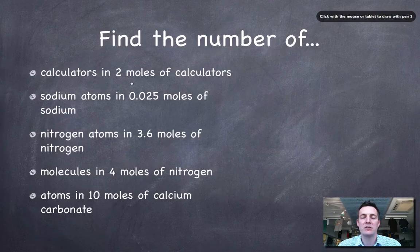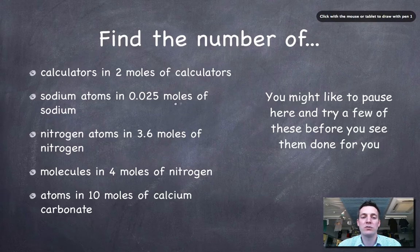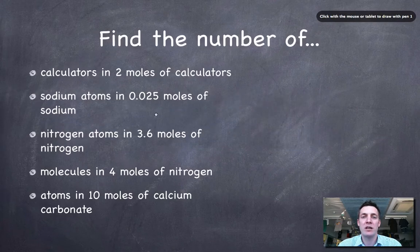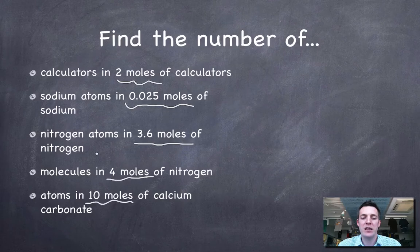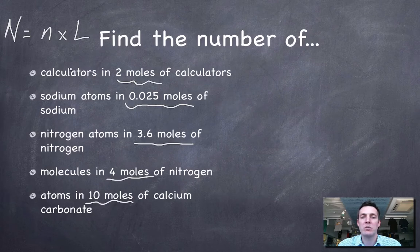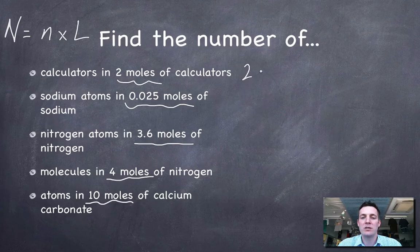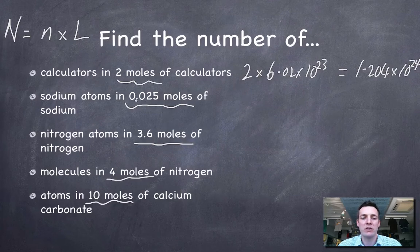We're being asked to find the number of calculators in two moles of calculators and the number of sodium atoms in 0.025 moles of sodium. So every time I'm being given the number of moles. And I'm being asked to find the number of things in that number of moles. So in other words, I'm being asked to find the number of particles, capital N. And I know from common sense, or from my triangle, or from memory, that this is the number of moles multiplied by Avogadro's number. So here I'd just be simply doing 6.02 times 10 to the 23 multiplied by 2. And that's 1.204 times 10 to the 24. You don't have to do these things in your head. You can do them on your calculator.